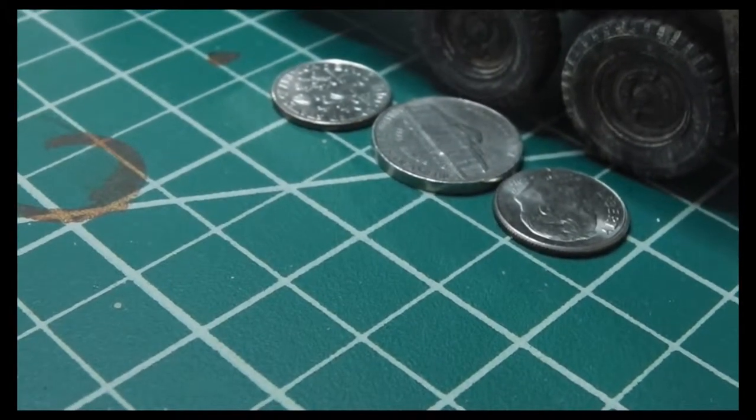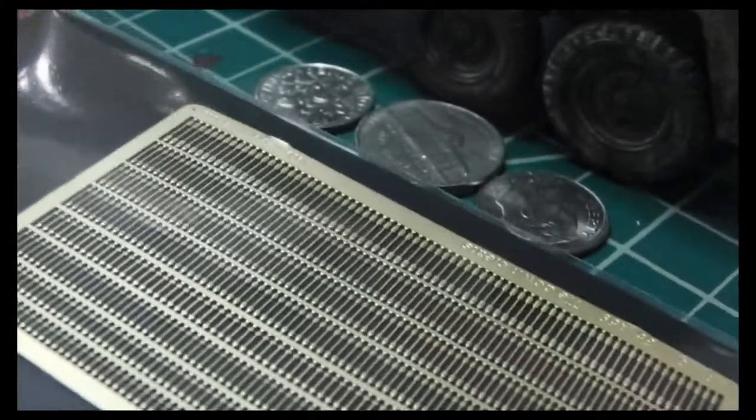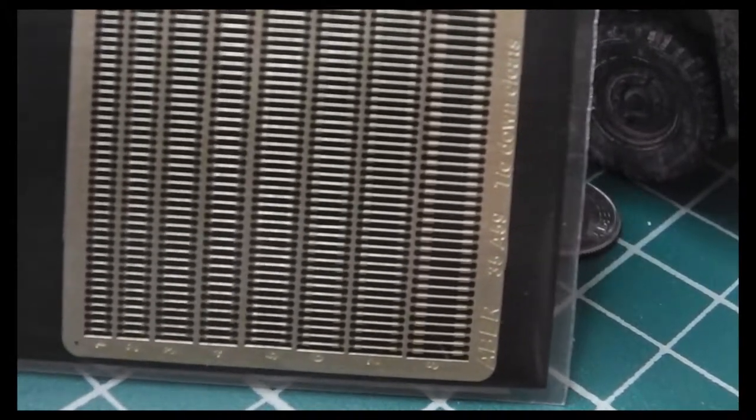Again, all this is 1:35th scale. And these are tie-down cleats. This is about probably one of the biggest sheets, but still you can see not that big. It goes from smaller to larger, various types of tie-downs.